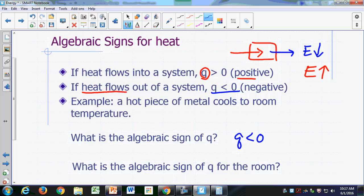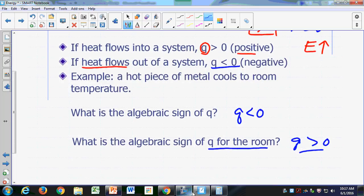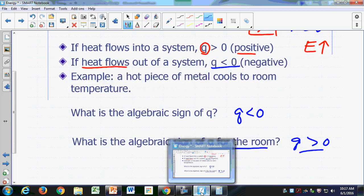Now, unless otherwise specified, like in this case, what's the algebraic sign of Q for the room? Because heat went out of the system, where did it go to? Go into the room, out of the system, into the room, so Q is positive for the room. So that's the algebraic sign convention for values of heat, okay?